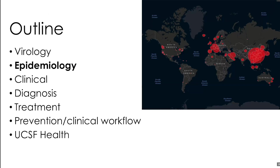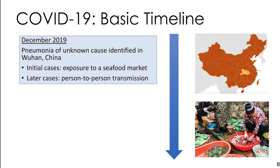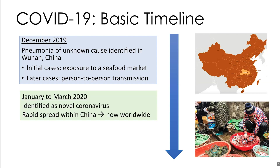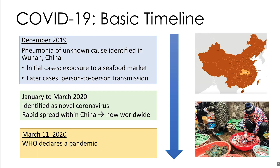Now moving to the epidemiology. In December 2019, there was a pneumonia of unknown cause identified in Wuhan, China. The initial cases all had exposure to a seafood market, but later cases did not, and there was evidence of person-to-person transmission. From January to March 2020, the virus was identified as a novel coronavirus causing this disease, and there was rapid spread within China and worldwide. On March 11, 2020, the WHO declared a pandemic.